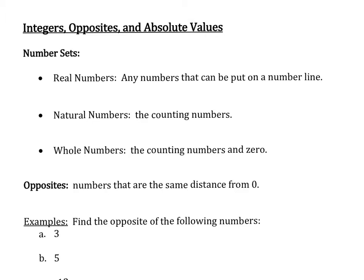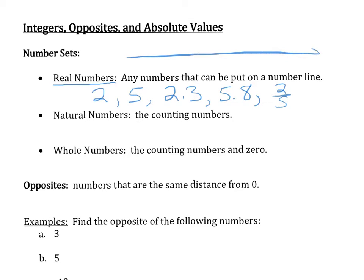One of the broadest sets of numbers is our real numbers. A real number is a number that can be plotted on a number line — a number like 2, a number like 5, a number like 2.3, a number like 5.8. We can actually have fractions, a number like 2 fifths. Remember, your number line extends in both directions, with 0 in the middle, and any number that we can put on the real number line is called a real number.